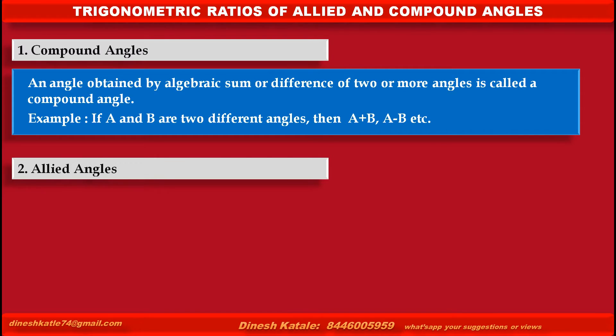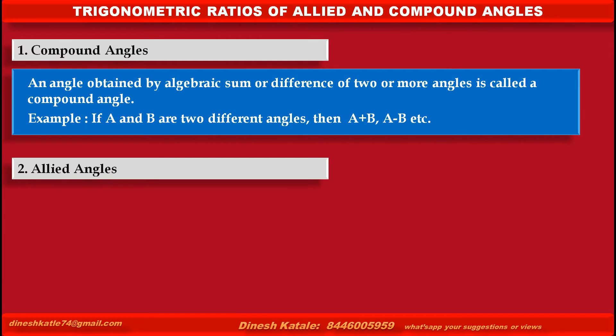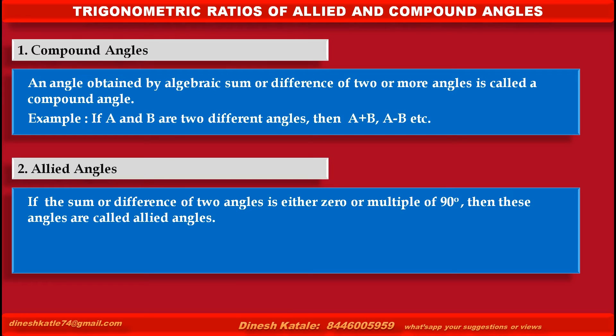Next is allied angles. If the sum or difference of two angles is either 0 or multiple of 90°, then these angles are called allied angles. Example: if θ is the measure of the given angle, then its allied angles are -θ, π/2 - θ, π/2 + θ, π - θ, etc.